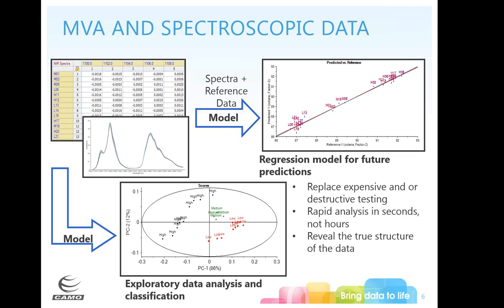Multivariate analysis is really good because it can replace expensive or destructive testing. The analysis happens in seconds, not hours — if you have to do an HPLC on a pharmaceutical tablet, that's going to take hours for each individual sample, and with multiple samples you might take weeks to get your information back. It also reveals the true structure of the data, allowing you to see everything that's going on at once rather than focusing on one particular component.